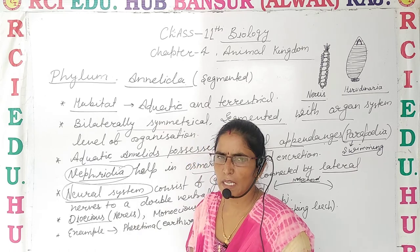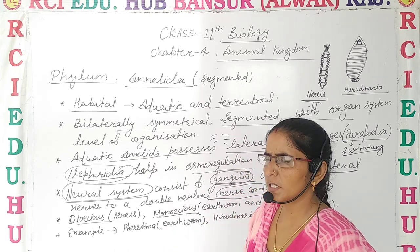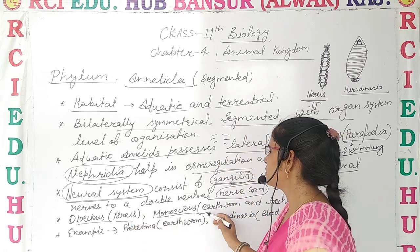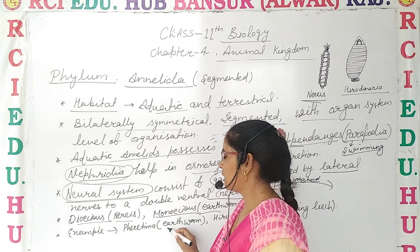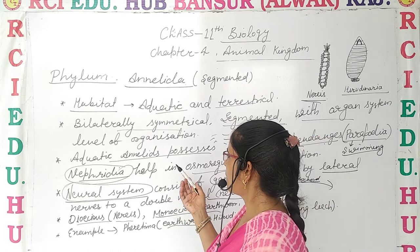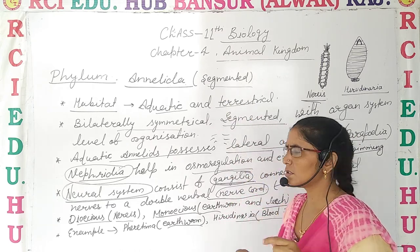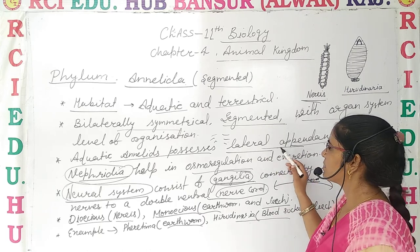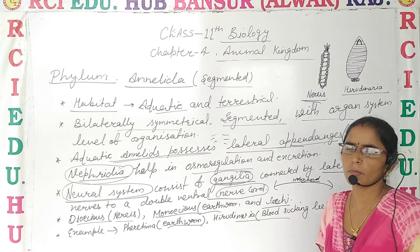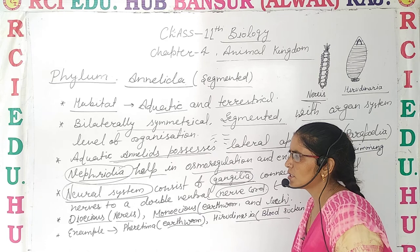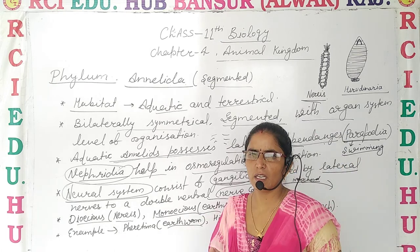Some annelids are dioecious — male and female are separable — like Nereis. Others are monoecious, where both sexes are present in the same organism, like earthworm and leech. To summarize Annelida: the body is segmented with ring-like structure, aquatic forms have lateral appendages for swimming, nephridia handle osmoregulation and excretion, and the neural system is developed by ganglia connected to the ventral nerve cord.